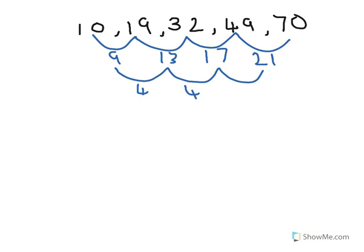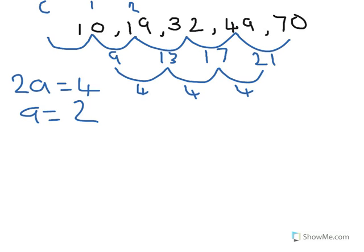So that means 2 times a is 4, which means a is 2 in this question. Now to find C: to get from 70 to 49, we took away 21; 49 to 32, we took away 17; 32 to 19, we take away 13; 19 to 10, we take away 9. Each of these things we're taking away goes down by 4 each time, so to get from 10 to whatever C is, we're going to take away 5. So C is 5.